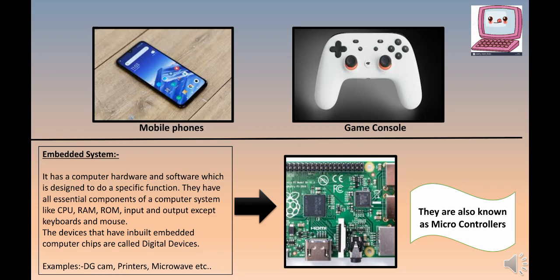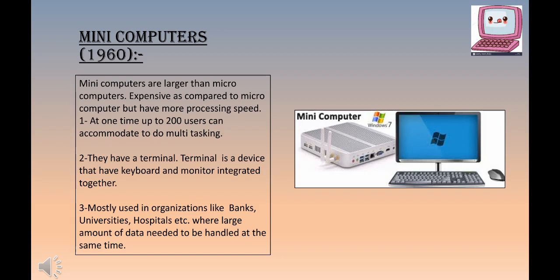Here comes the second type: mini computers. Mini computers came into existence in 1960. They are larger than micro computers and more expensive, but have more processing speed. As you can see in the image, they may look similar to a desktop, but do not be confused — mini computers are much larger than microcomputers.